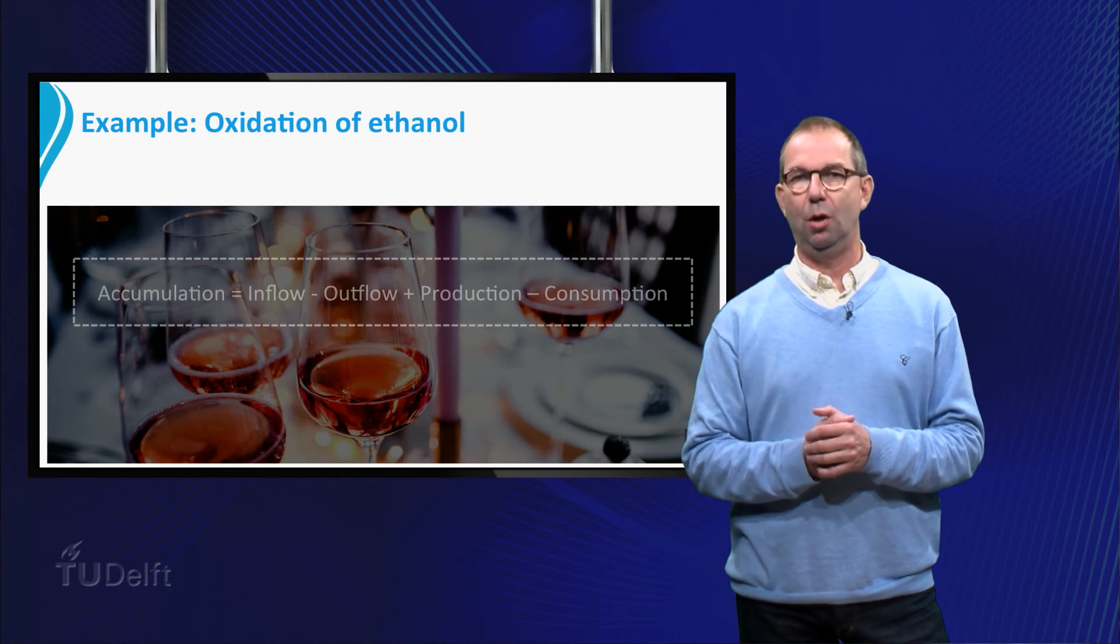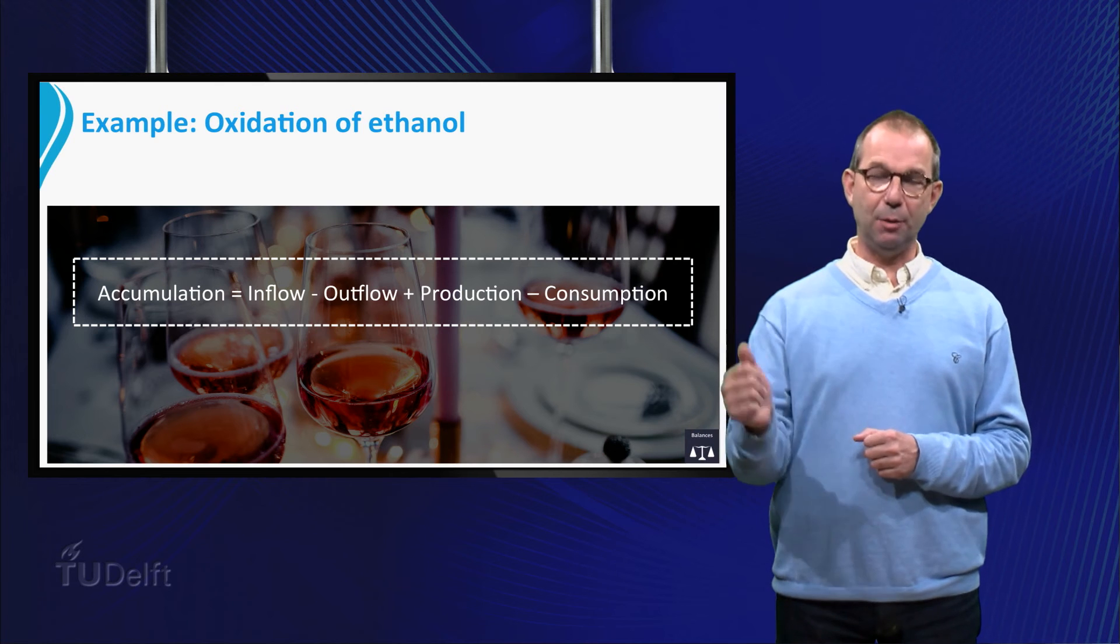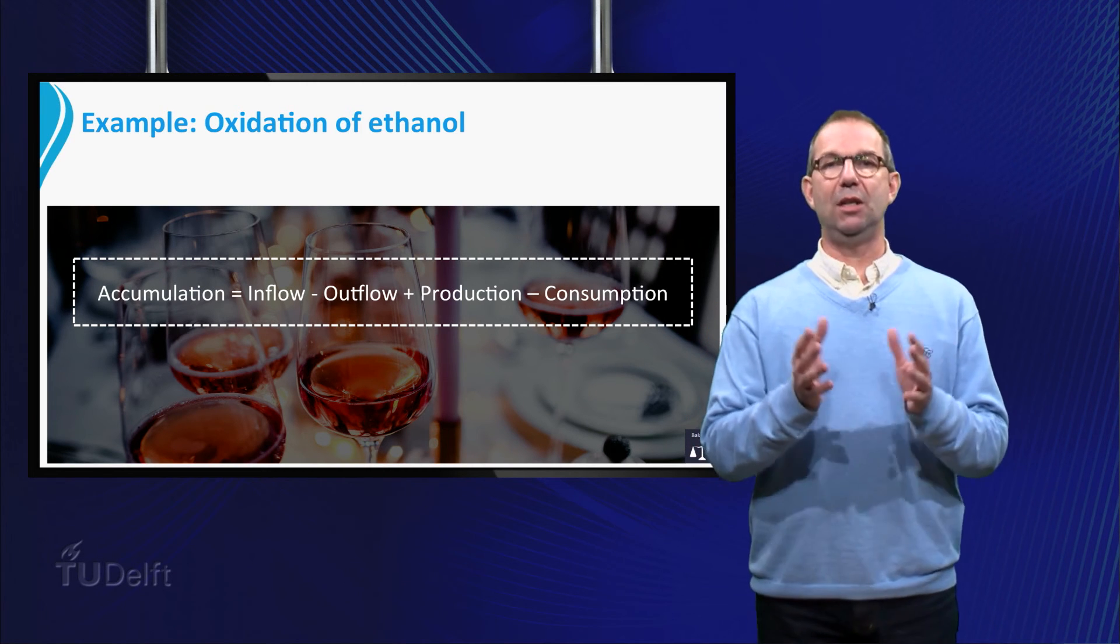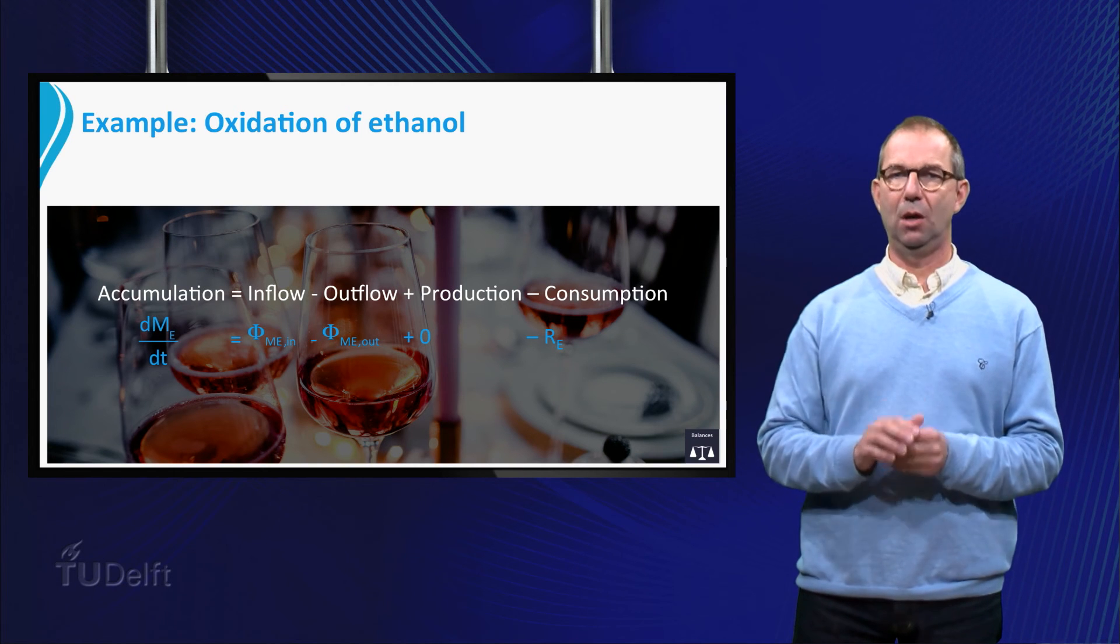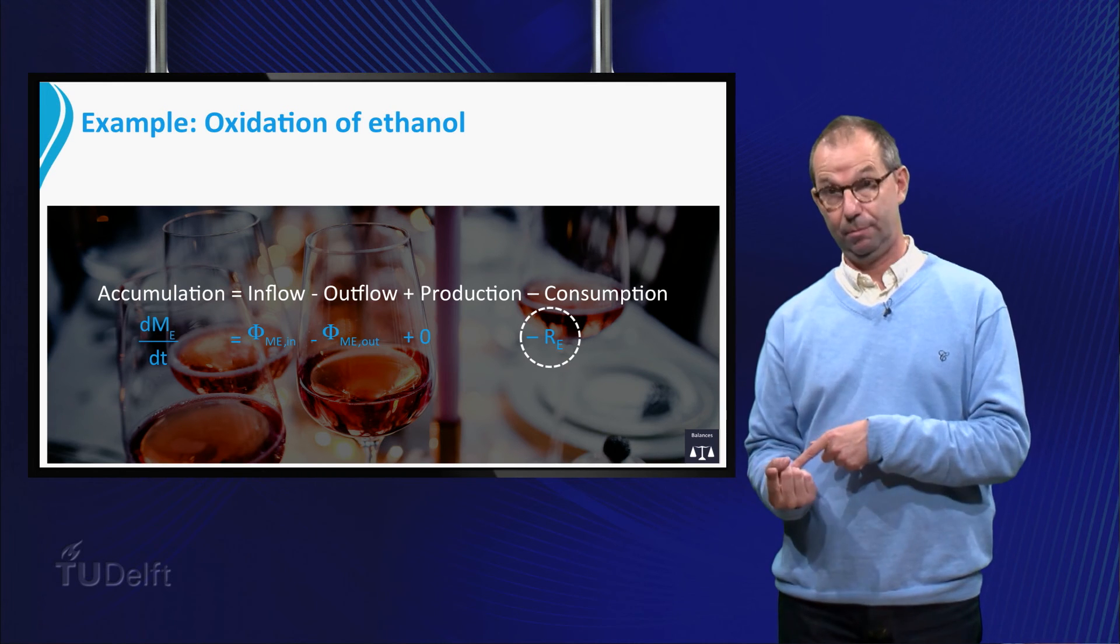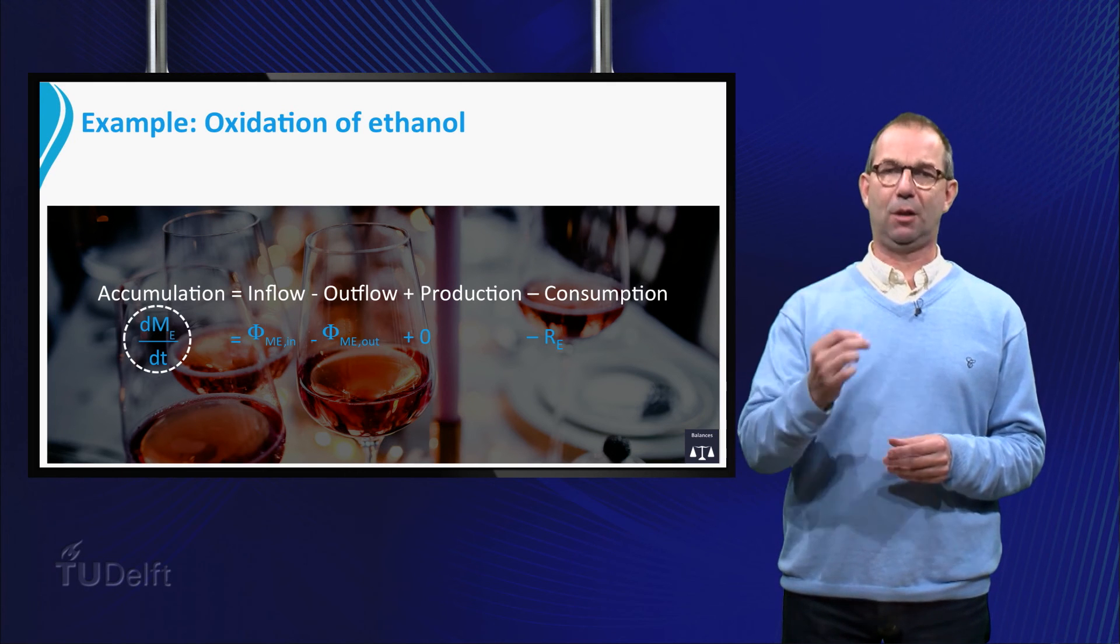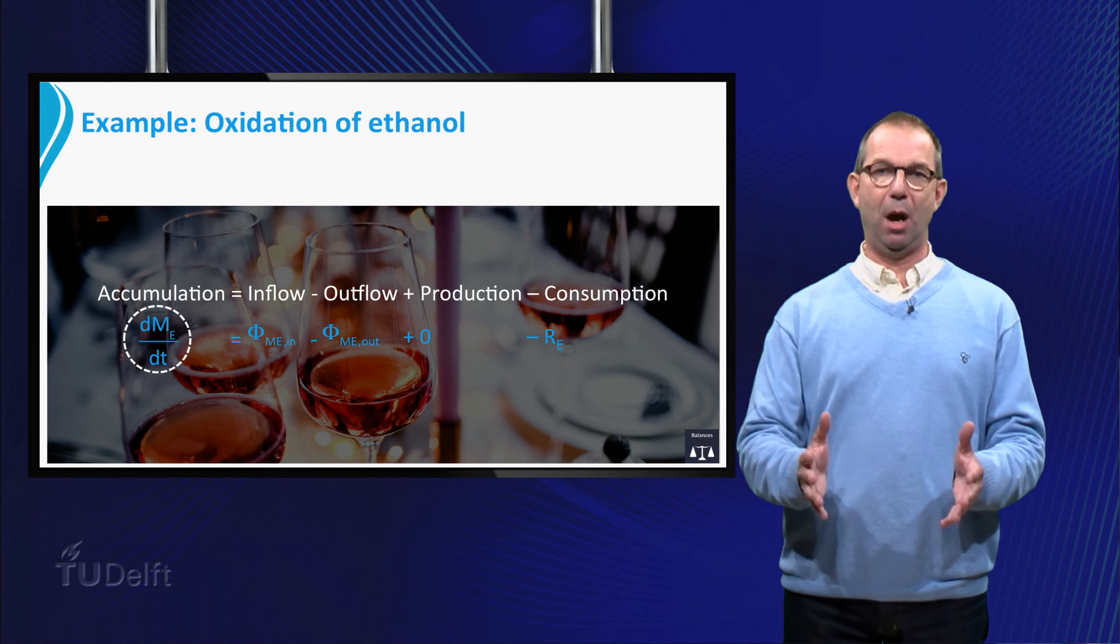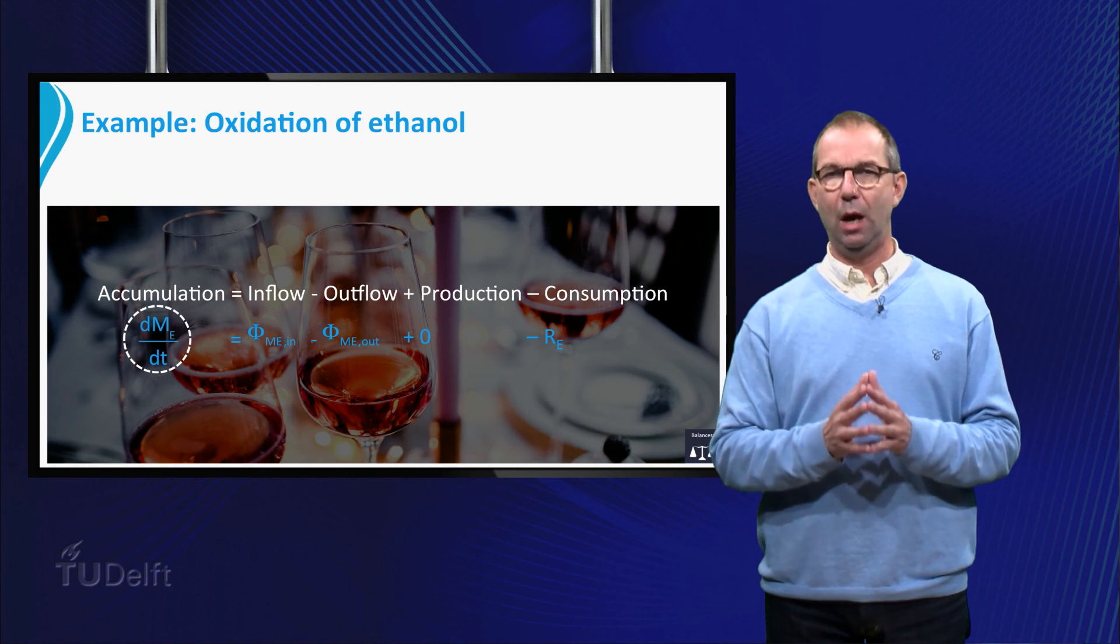Now we can set up a mass balance of one species of the process, for example ethanol. Again we write accumulation equals inflow minus outflow plus production minus consumption. Applying this to ethanol gives us the following balance equation. We see a new way of writing. On the right hand side we use the symbol R sub E for the amount of ethanol that reacts with oxygen to acid. Further we see on the left hand side that we have written the accumulation term in a specific mathematical form, d dt of M sub E. This denotes in a formal mathematical way that the mass of ethanol inside the reactor is changing over time. Check out one of the glass plate examples where we show how we mathematically do this.